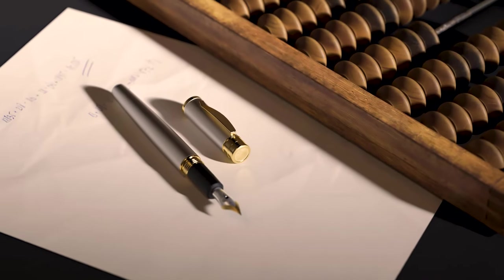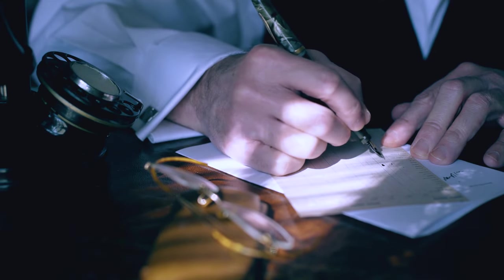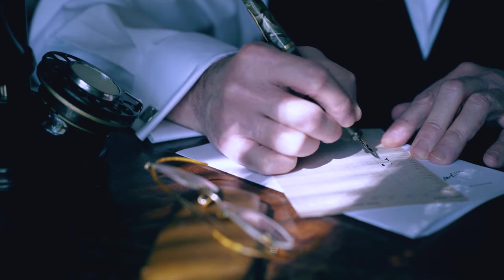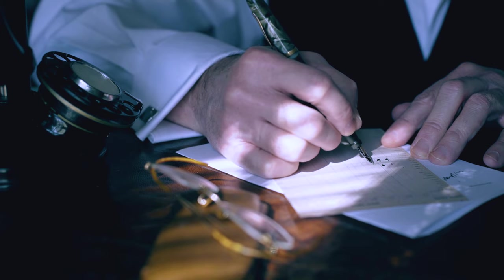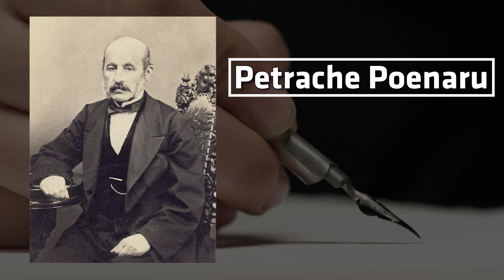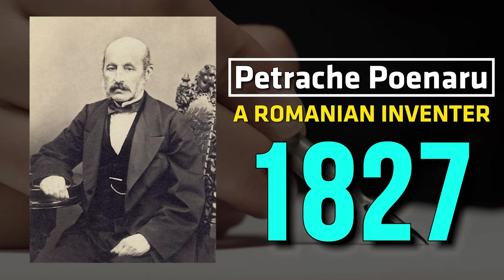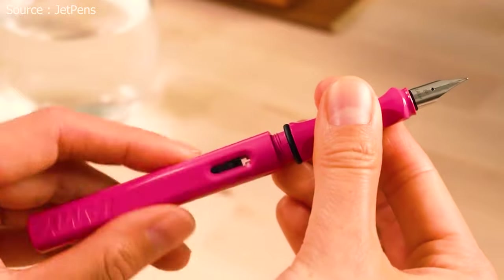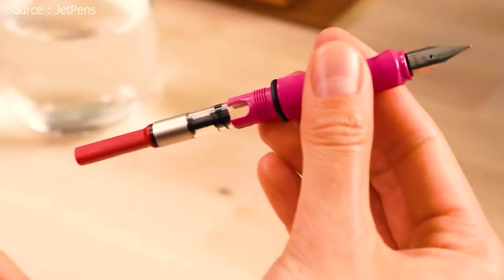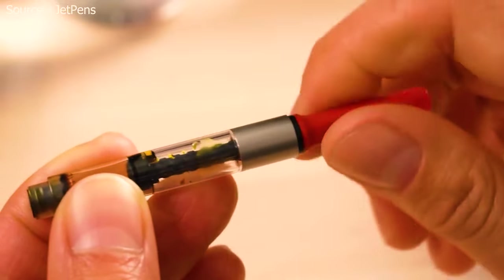The fountain pen marked a turning point in writing efficiency, providing a smoother, less messy experience that allowed people to focus on their thoughts and ideas. The modern fountain pen was patented by Petrache Poenaru, a Romanian inventor, in 1827. Its innovative design allowed for a continuous flow of ink from a reservoir to the nib, eliminating the need for constant dipping like the quill pen.